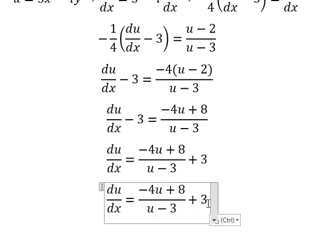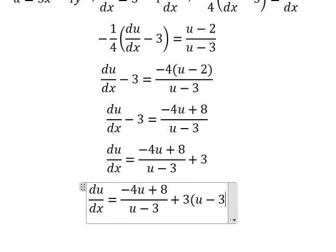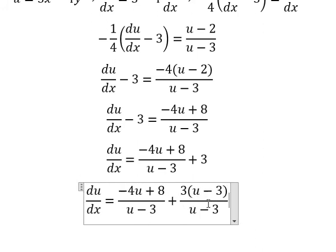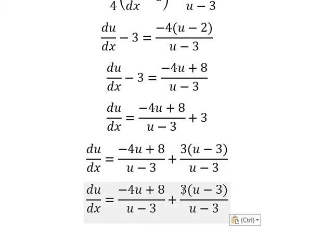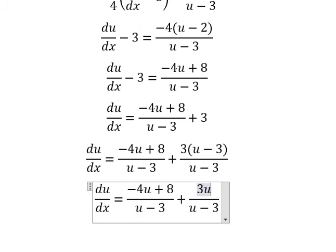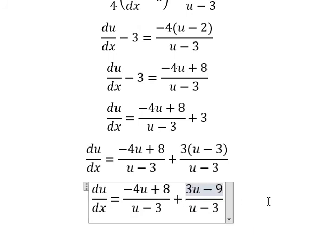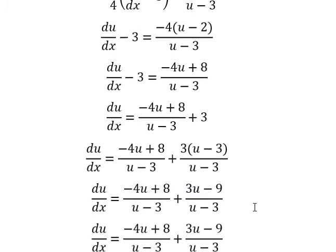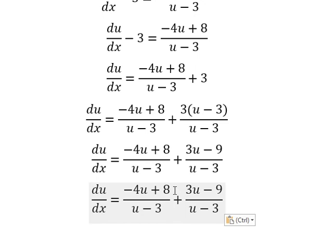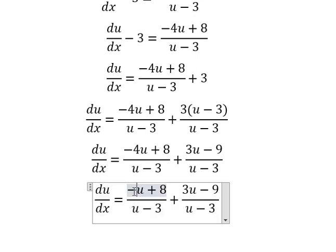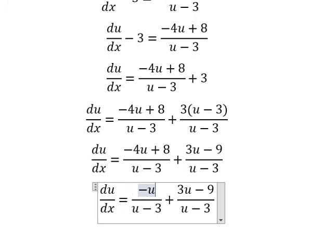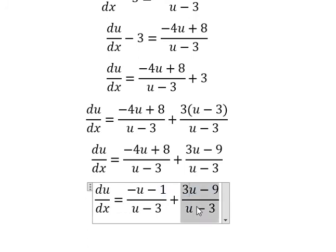Now we do common denominator. This one we have 3u minus 9. So negative 4u plus 3u gives us negative u. 8 minus 9 gives us negative 1.